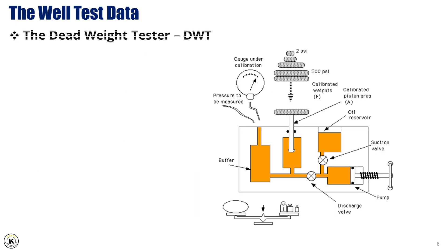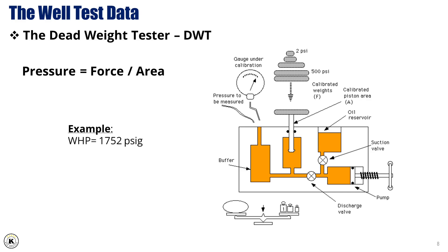The deadweight tester (DWT) is a highly accurate device used to calibrate pressure gauges and pressure transducers. It works on the principle that pressure equals force divided by area. Force is applied using a known weight (deadweight) that presses down on a piston or plunger, and the area refers to the cross-sectional area of that piston. By using precise, known weights, the DWT can provide highly accurate pressure measurements.